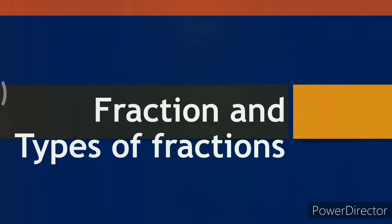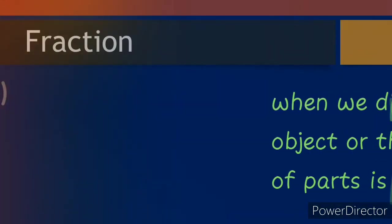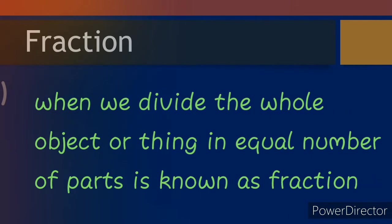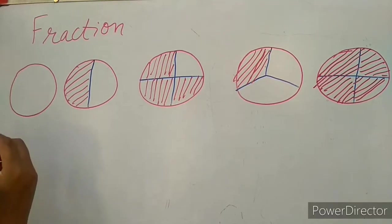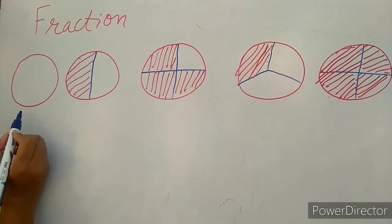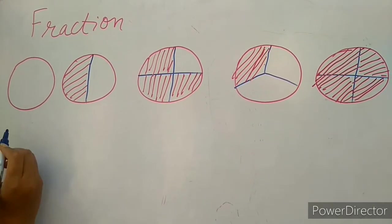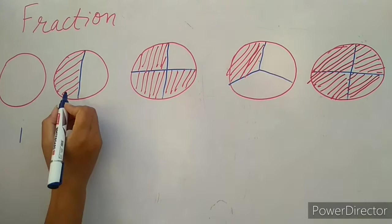Hello friends. In this video we discuss about fraction and types of fraction. When we divide a whole object or thing into an equal number of parts, that is known as a fraction. For example, this is a circle — a full, complete, whole circle, so it represents 1.